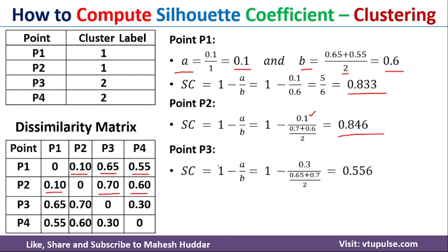Similarly, we calculate the silhouette coefficient for P3. P3 is in cluster 2, and the only other point in that cluster is P4. The distance from P3 to P4 is 0.3, divided by 1, so a = 0.3. For b, we calculate the average distance to points in the other cluster: P3 to P1 is 0.65, and P3 to P2 is 0.7. So b = 0.65 plus 0.7 divided by 2. Solving gives a silhouette coefficient of 0.556.